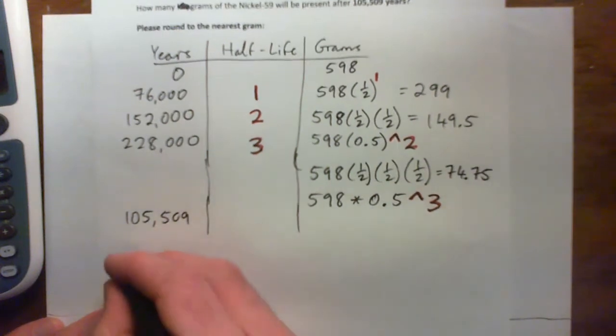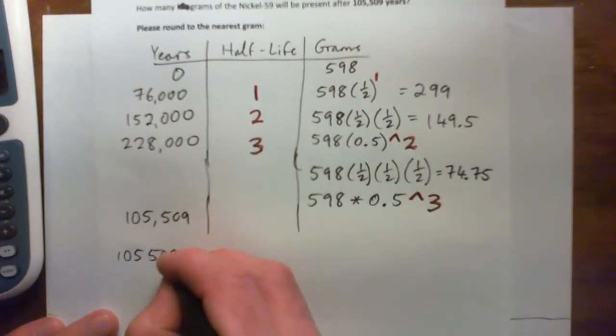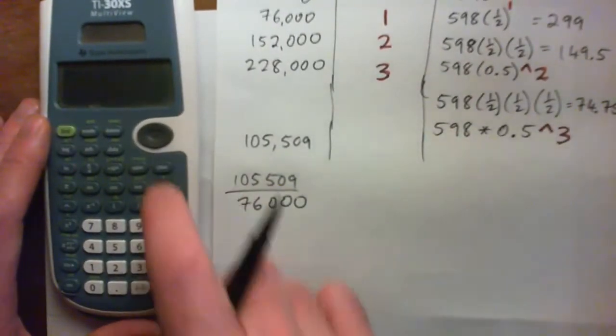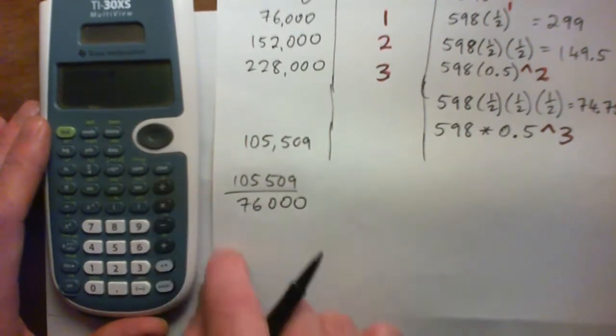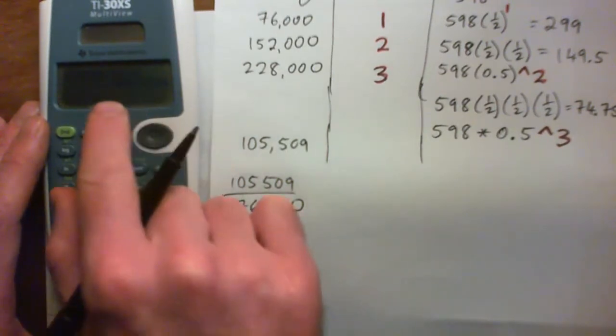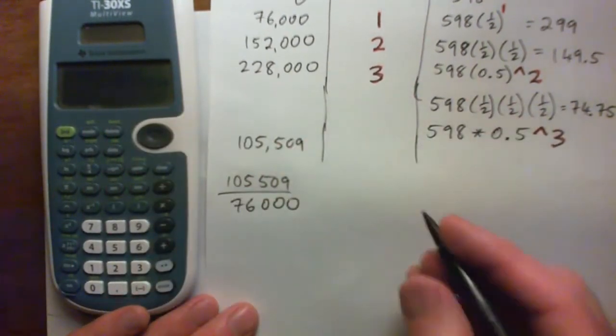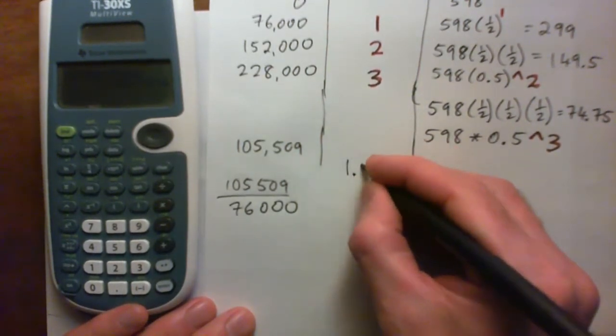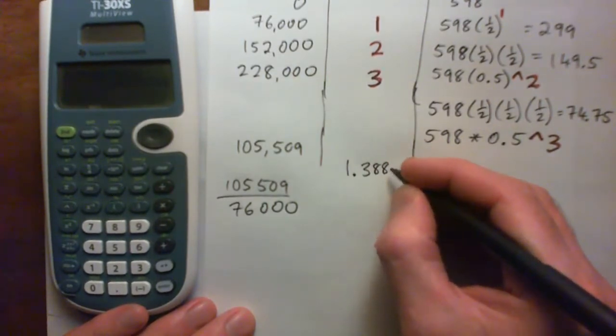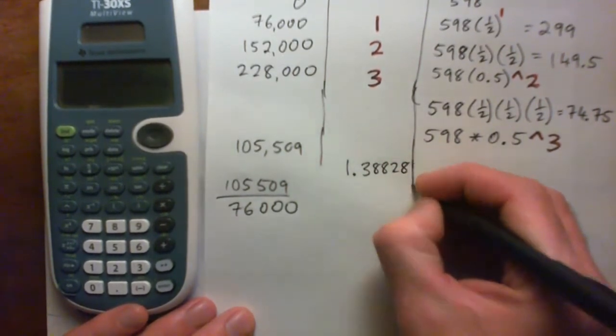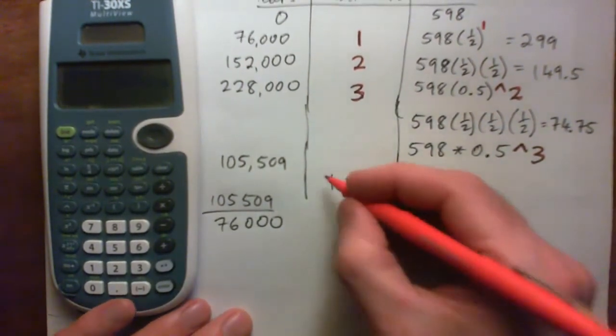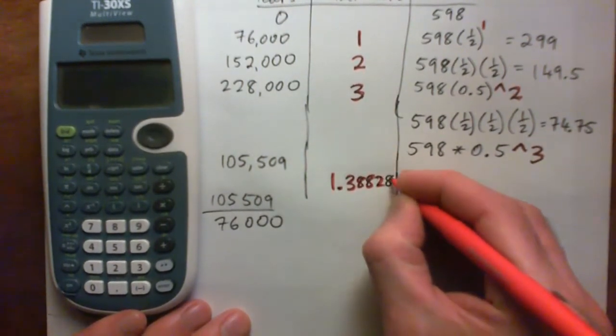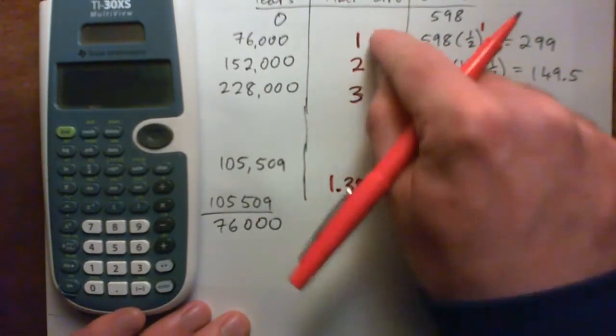Well, we divide it. So we go 105,509 divided by 76,000. So 105,509 divided by 76,000, and we get 1.38882, and so on. So I'm just going to take five decimal points. So 1.38828, approximately. So this is the number of half-lives we need to take. 105,509 years is approximately this many half-lives. It's not two half-lives. It's not one. It's somewhere in between.